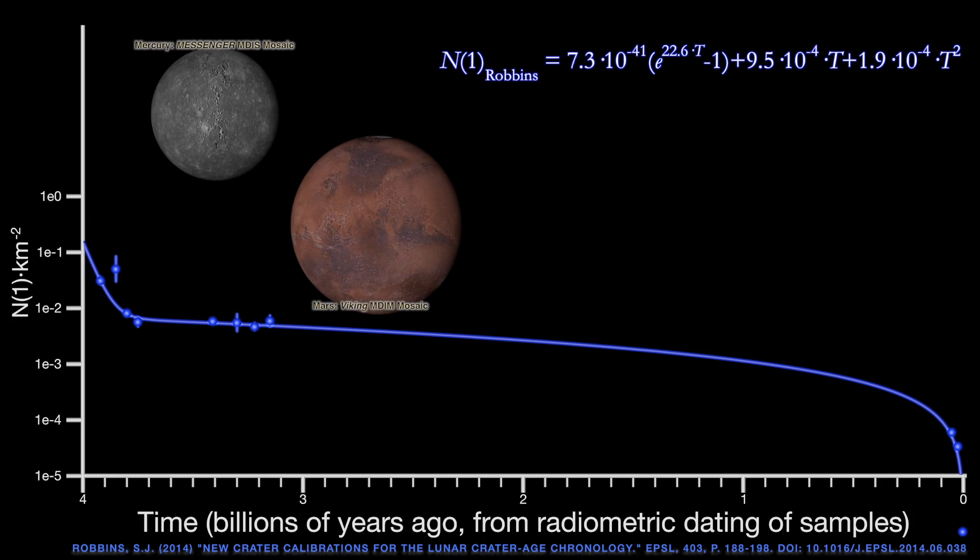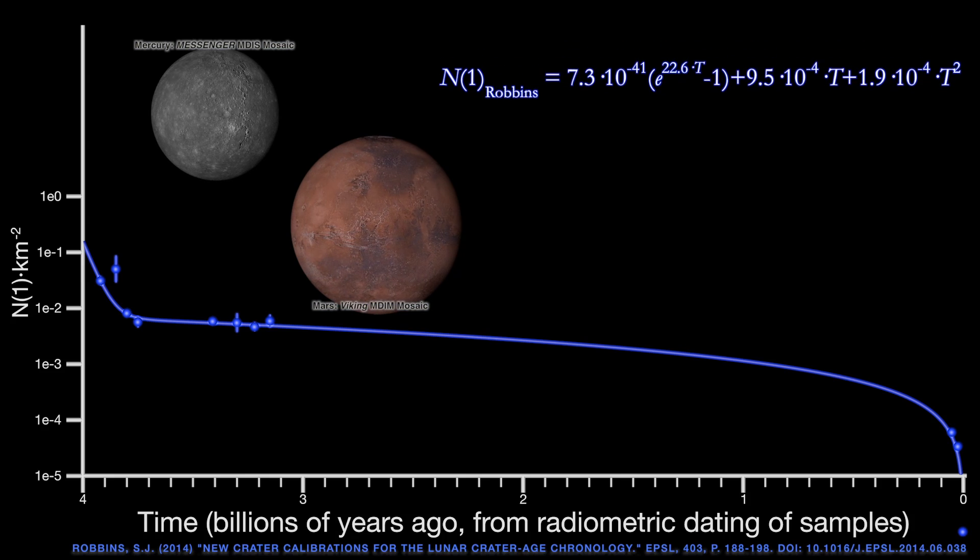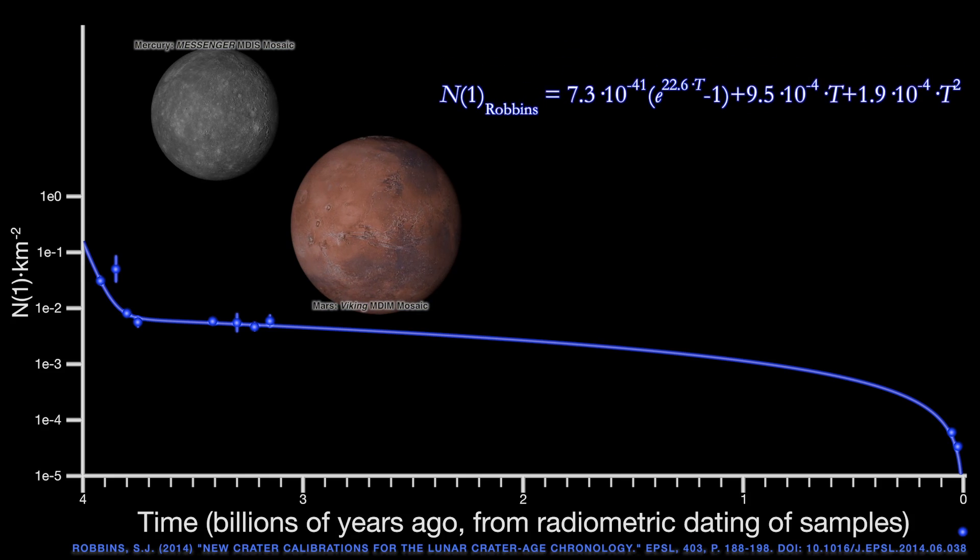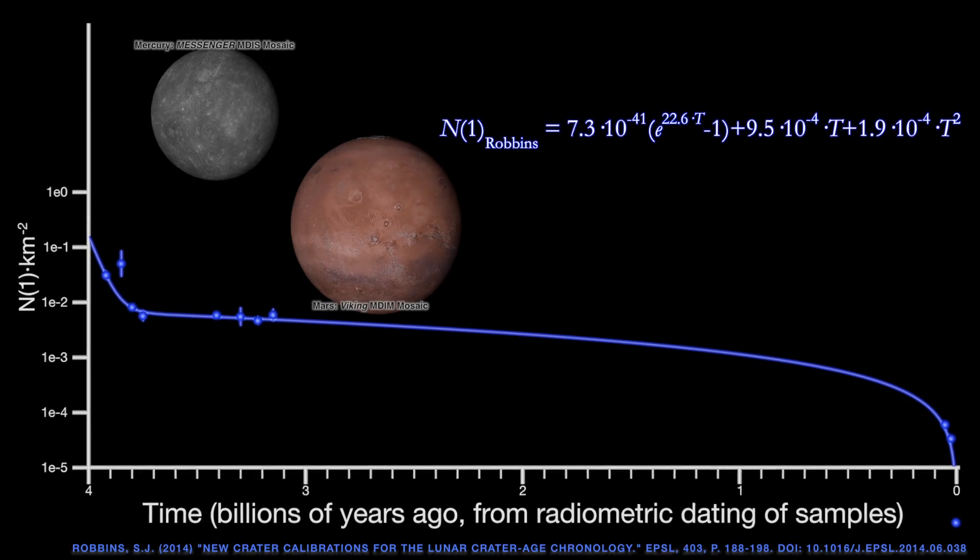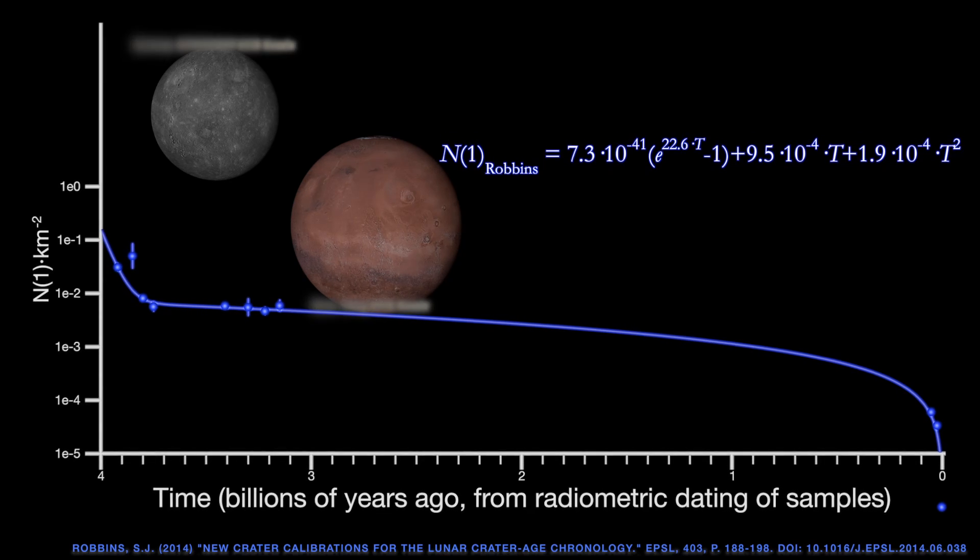We can transfer it to Mars, Mercury, Venus, and elsewhere in the solar system through dynamical models, and it forms the basis of our timescales for what happened when on the surfaces of other worlds.